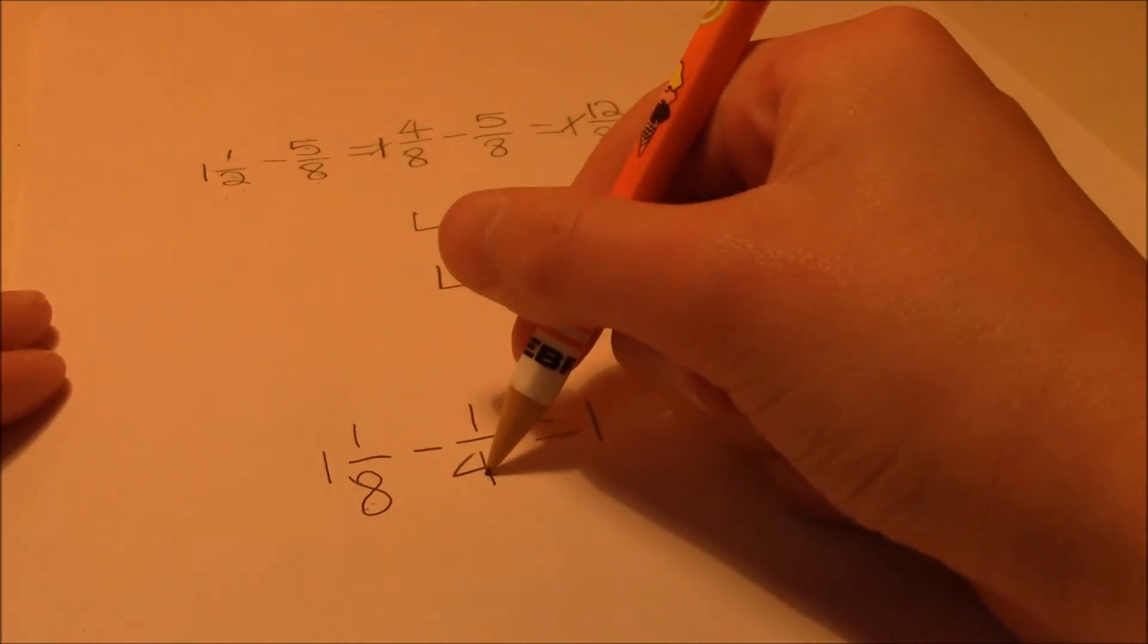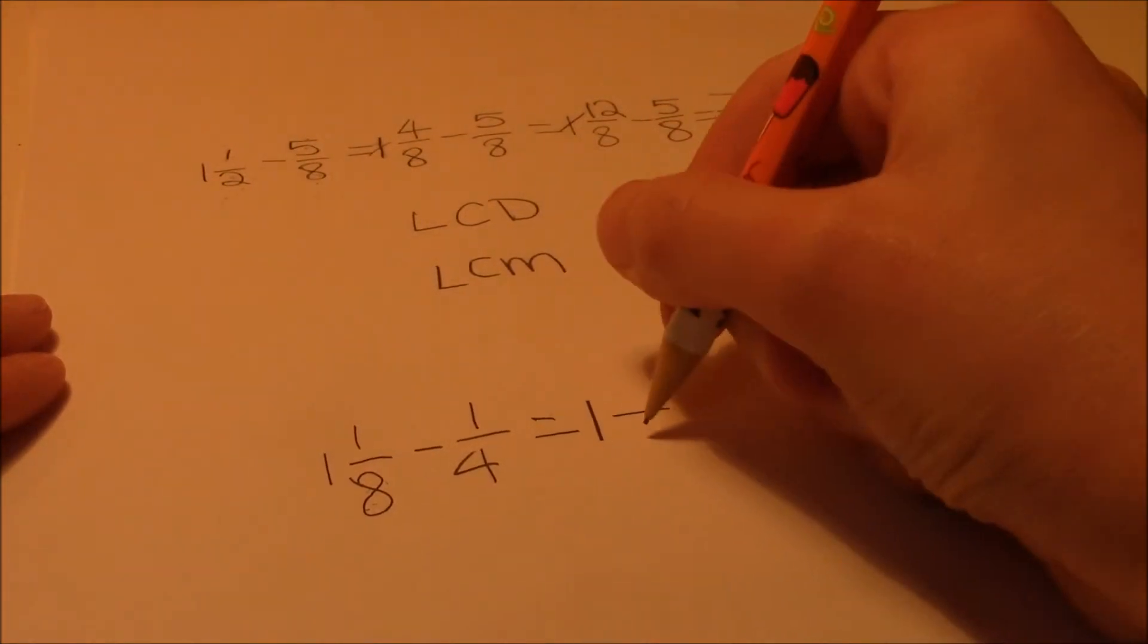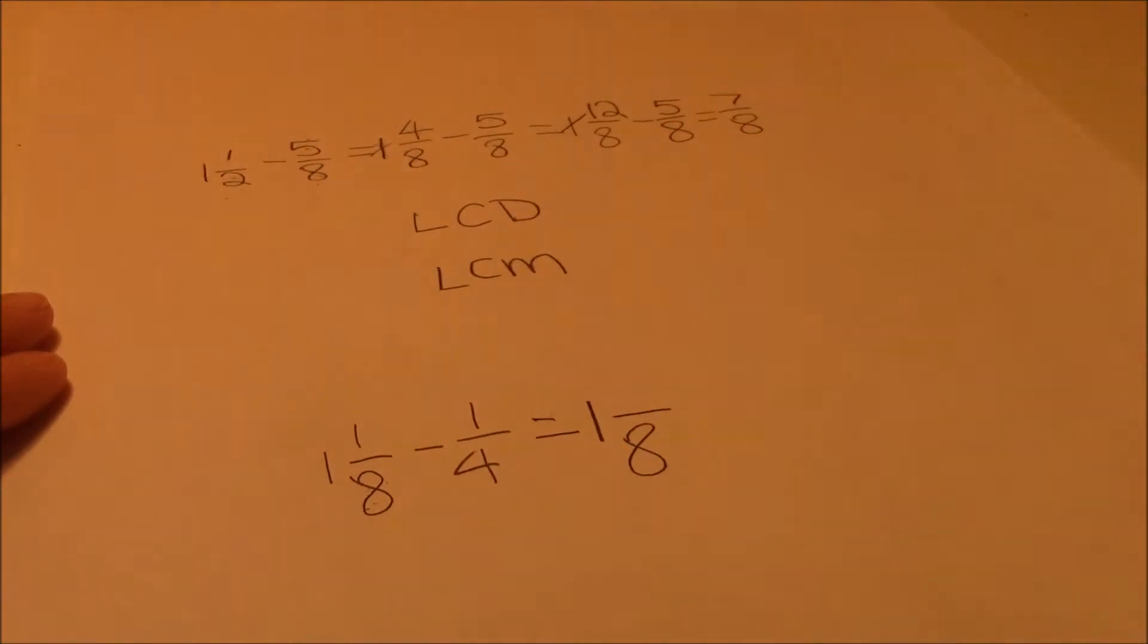And 4 times 2 happens to be 8, and 8 times 1 happens to be 8. So, lowest common denominator is 8.